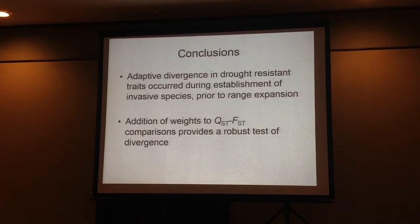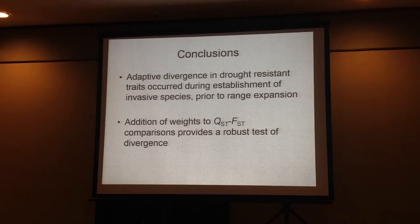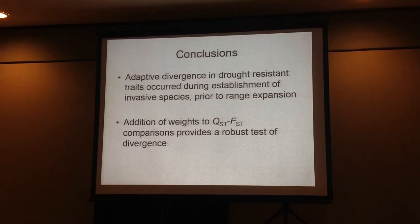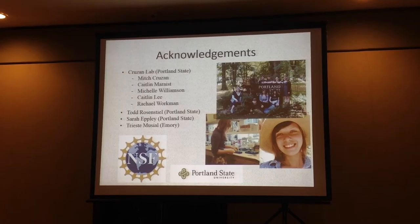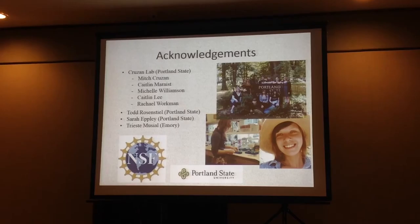In conclusion, I found adaptive divergence in drought resistance traits occurring during the establishment of the invasive species Brachypodium sylvaticum, prior to range expansion. Utilizing the addition of weights to the QST-FST comparison increased the robustness of tests for adaptive divergence. I'd like to thank the Kruzan lab at Portland State, my advisor Rich Kruzan, my undergraduate assistant Caitlin Murray who did a lot of microscopy work, Todd Rosensteel, and Sarah Upley. I'll take questions.